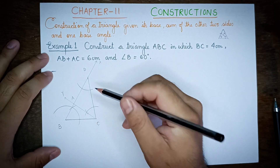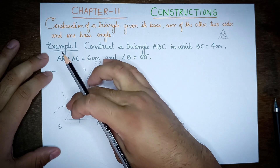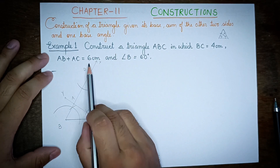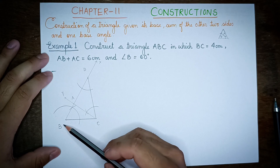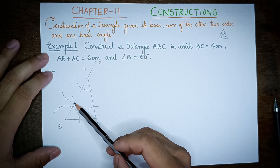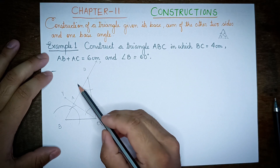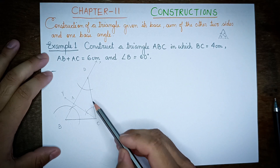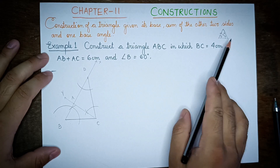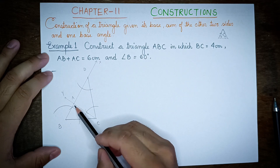The angle of the opposite side of AD and AC. If BD is 6 cm, then BD is 6 cm.